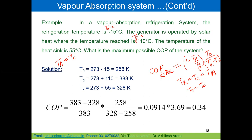We need to convert temperatures to Kelvin: T_naught equals 258 K, T_g equals 273 plus 110 equals 383 K, and T_k equals 273 plus 55 equals 328 K. Substituting into the COP equation — (T_g minus T_k) divided by T_g, multiplied by T_naught divided by (T_k minus T_naught) — the COP comes out to be 0.34.